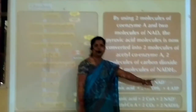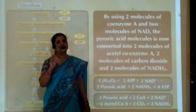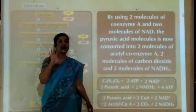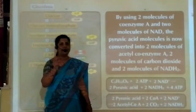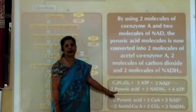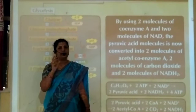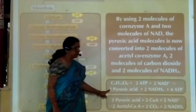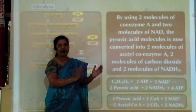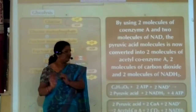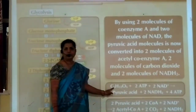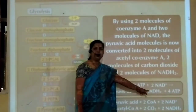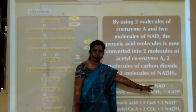Glucose is a 6-carbon compound. During glycolysis, it breaks down into 2 molecules of pyruvic acid, each a 3-carbon compound. Along with these, 2 molecules of NADH2 and 4 molecules of ATP are also released.